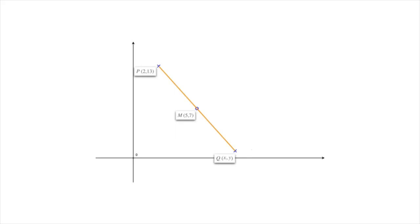Well, since P has x-coordinate 2 and M has x-coordinate 5, to get from P to M, we need to move 3 units to the right. So that would be plus 3 in the x-direction. Remember, when we move to the right it's positive, and when we move to the left it'd be negative.